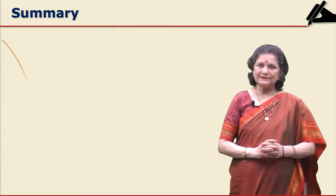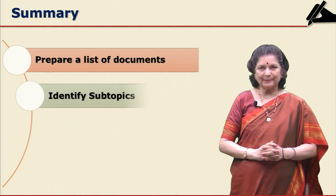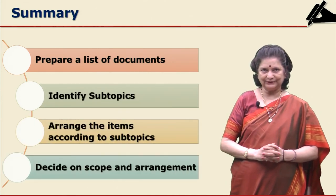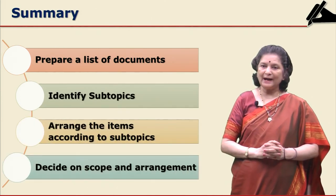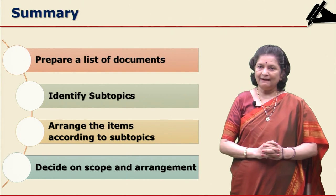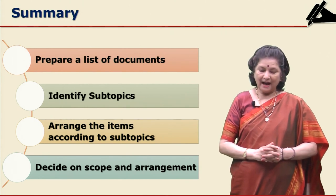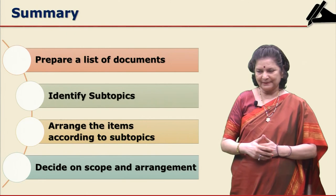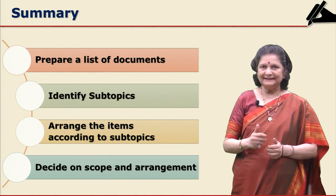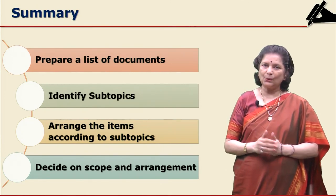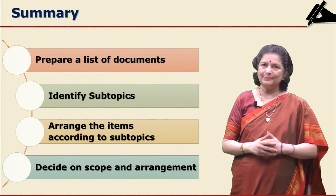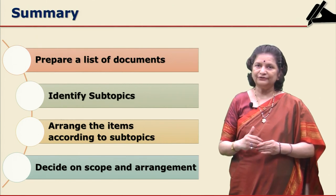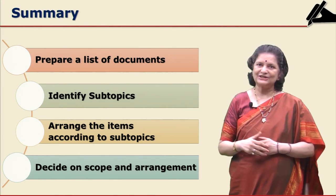To summarize: you have to prepare the list of documents that you have found. You have to identify the subtopics, arrange the items according to the subtopics, and then decide the scope and arrangement of your own writing of the literature review.